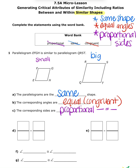Now let's set up our proportion. When we set up a proportion, we're going to make a fraction and always put the big figure on top and the small figure on the bottom. We always start with our larger figure.